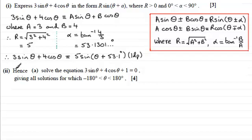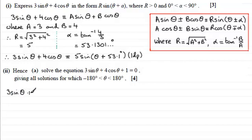In the second part of this question, it says hence solve the equation 3 sin θ + 4 cos θ + 1 = 0, giving solutions for θ between −180° and 180°. Since it says 'hence', we replace 3 sin θ + 4 cos θ with 5·sin(θ + 53.1°), and subtract 1 from both sides.